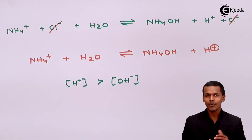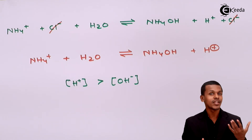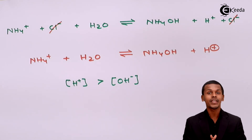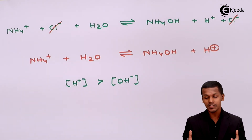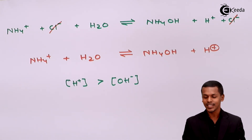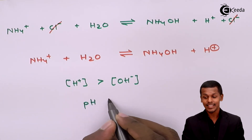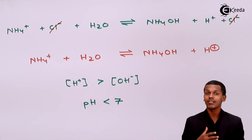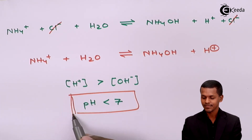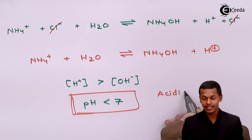Comparing with the pH scale: if H+ ion concentration increases, the pH value decreases. A neutral solution has pH equal to 7, but this solution is not neutral. Since H+ concentration is greater than OH-, the pH is less than 7, making this an acidic solution — not neutral, not basic.